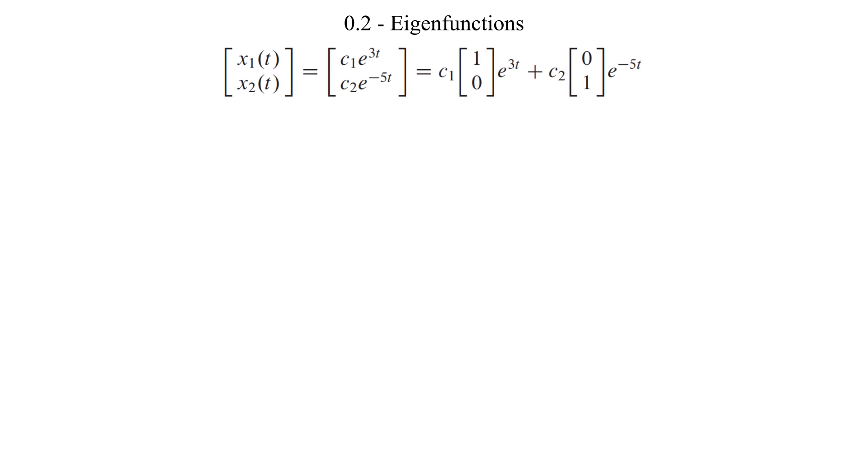This leads us into possibly the most important notion established in this chapter. The prior example suggests that for the general matrix differential equation, a solution might be a linear combination of functions in the form given for some scalar quantity lambda and some constant non-zero vector v.